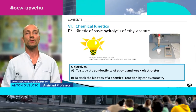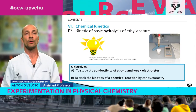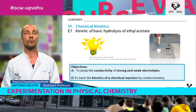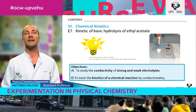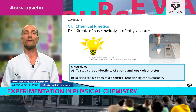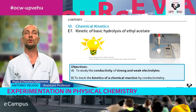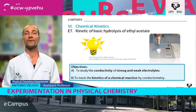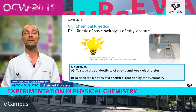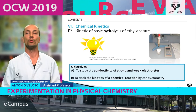The sixth lesson is about chemical kinetics. The experiment to be performed is the kinetics of basic hydrolysis of ethyl acetate. We have two objectives: to study the conductivity of strong and weak electrolytes, and to track the kinetics of a chemical reaction by conductometry.